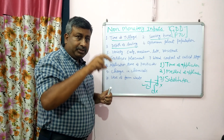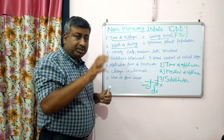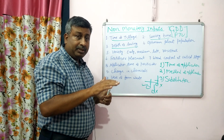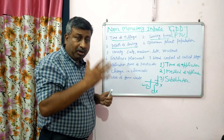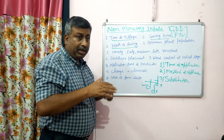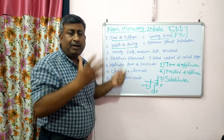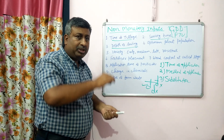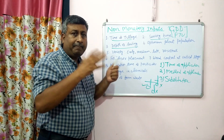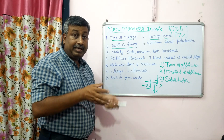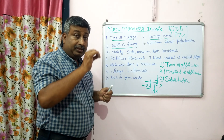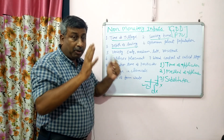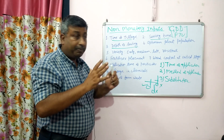Shallow sowing is not good because the coleoptile is delicate and exposed to insect, disease, and lodging, leading to mechanical damage. Deeper sowing beyond optimum is also not good. So optimum depth of sowing leads to proper crop establishment. The cost involved in sowing is the same regardless of depth, but by changing the depth of sowing we get a different plant population.